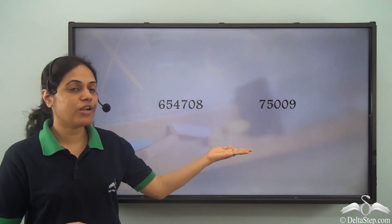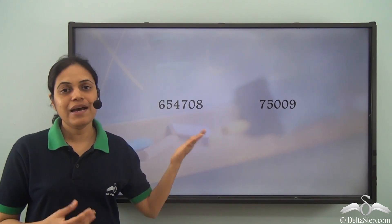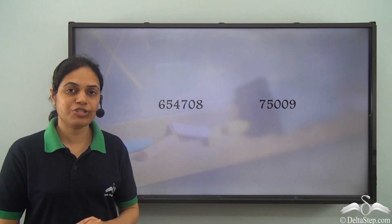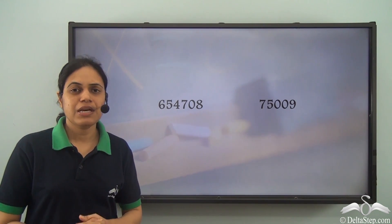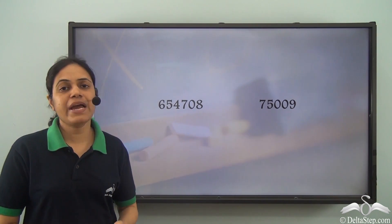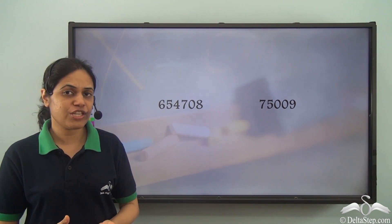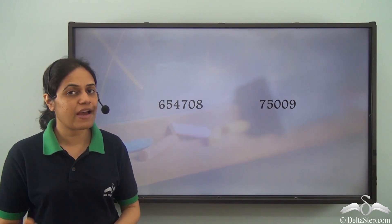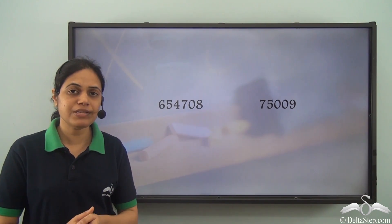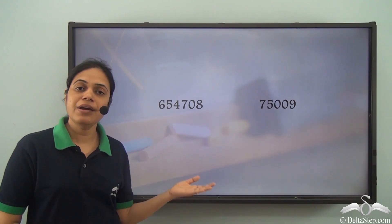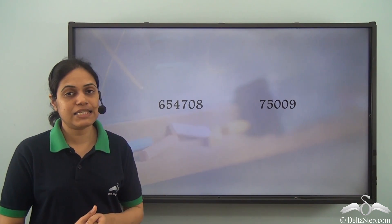We have two numbers here and we need to compare these two numbers. We have already compared three-digit numbers, four-digit numbers, and five-digit numbers. Now let us see how we can compare six-digit numbers.